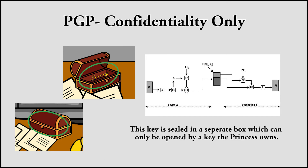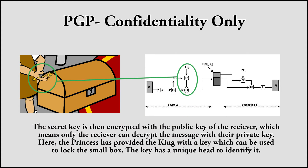This key is sealed in a separate box, which can only be opened by a key the princess owns. The secret key is then encrypted with the public key of the receiver, which means only the receiver can decrypt the message with their private key. Here, the princess has provided the king with a key which can be used to lock the small box. The key has a unique head to identify it.